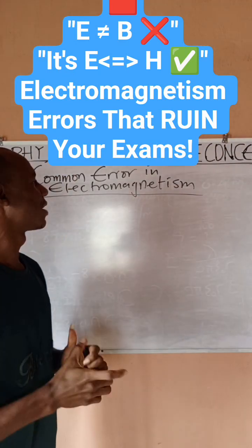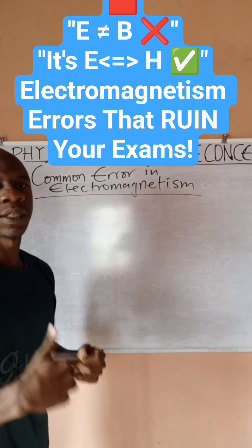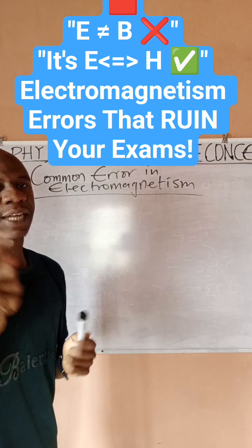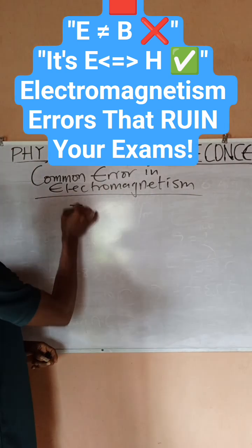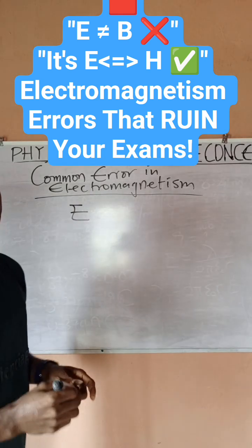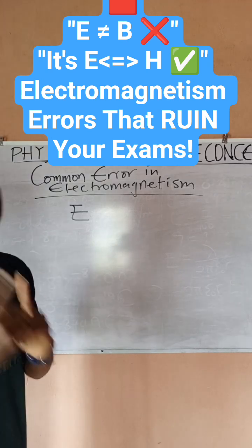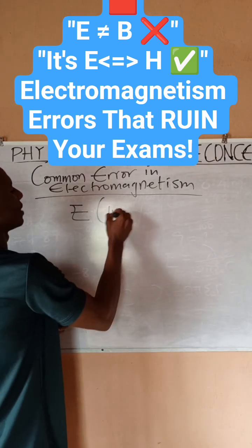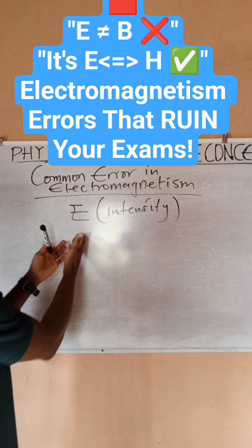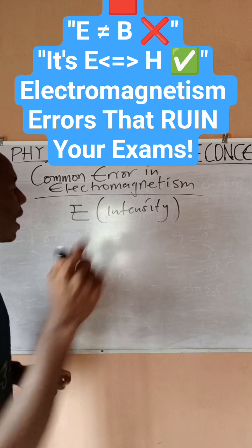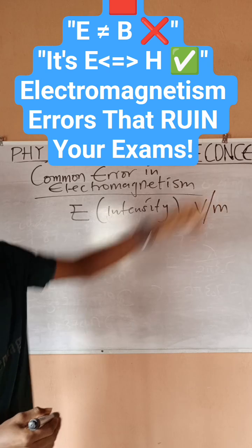Hello guys, Prime Concept once again. I'll be taking a series on common errors in electromagnetism — things that students usually confuse. In this video, you have an electric field, and E represents electric field intensity, or electric field strength. The unit of E is volts per meter, or equivalently newtons per coulomb.